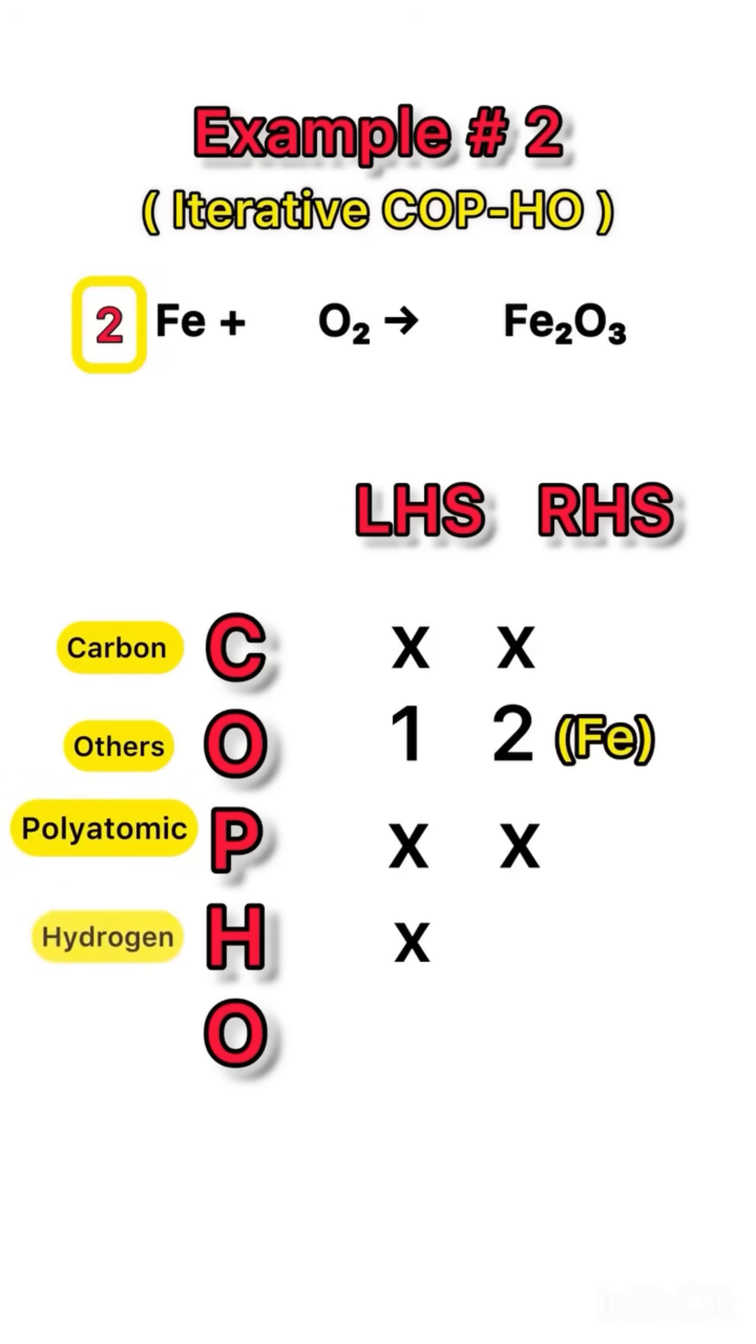Hydrogen is also not there, so cross that too. Now oxygen: on the left hand side in O2, oxygen is 2. On the right hand side in Fe2O3, it's 3. LCM of 2 and 3 is 6, so put 3 in front of O2 on left hand side and 2 in front of Fe2O3 on right hand side.